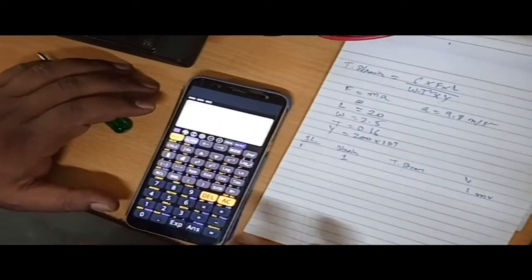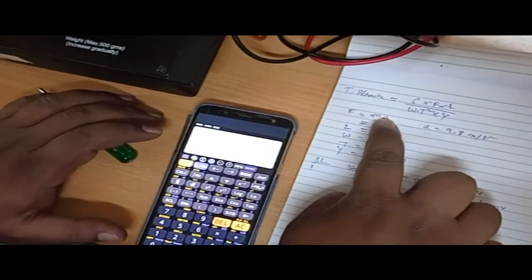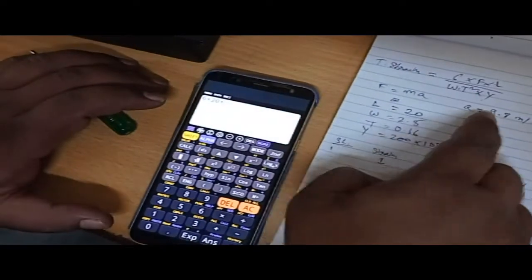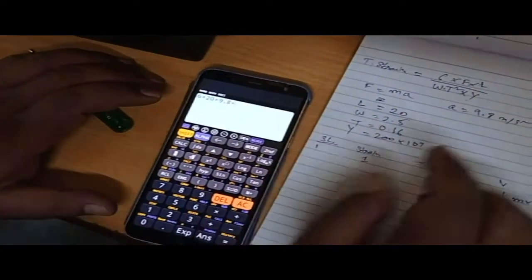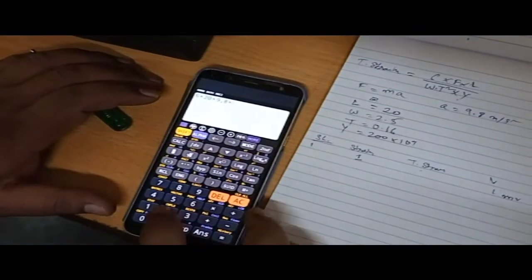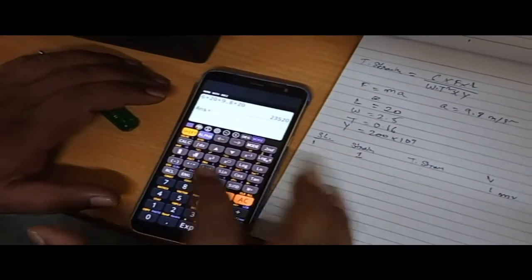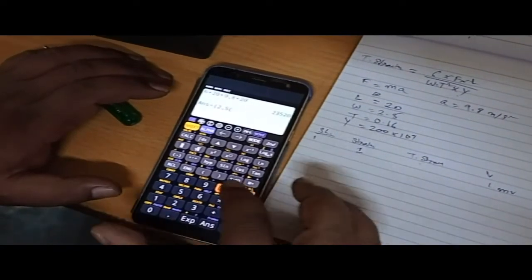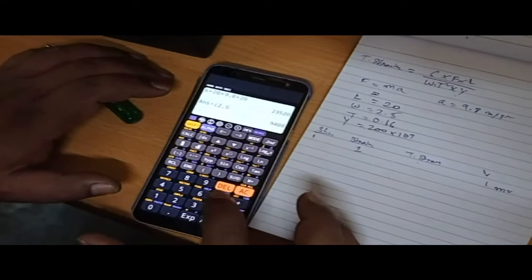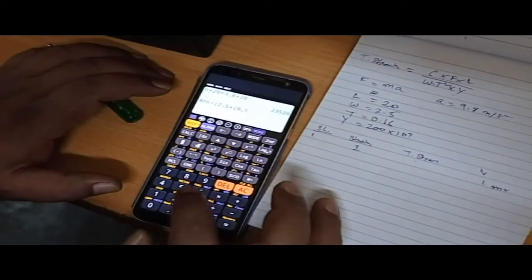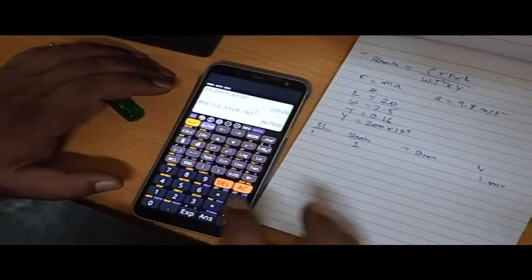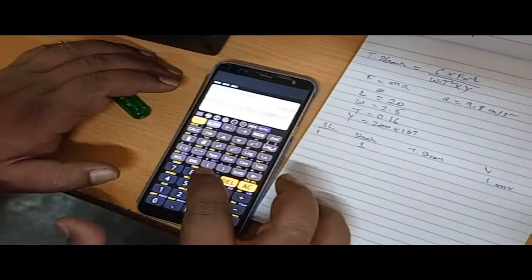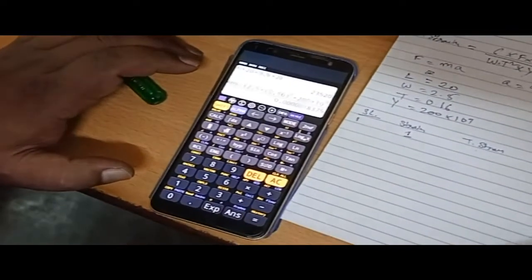Theoretical strain: 6 times F, mass times acceleration (9.8), times L constant (20cm) divided by W (2.5) times T squared, constant 0.16 squared, times Y, Young's modulus 200 times 10 to the power 9, equals the strain for 20 grams.